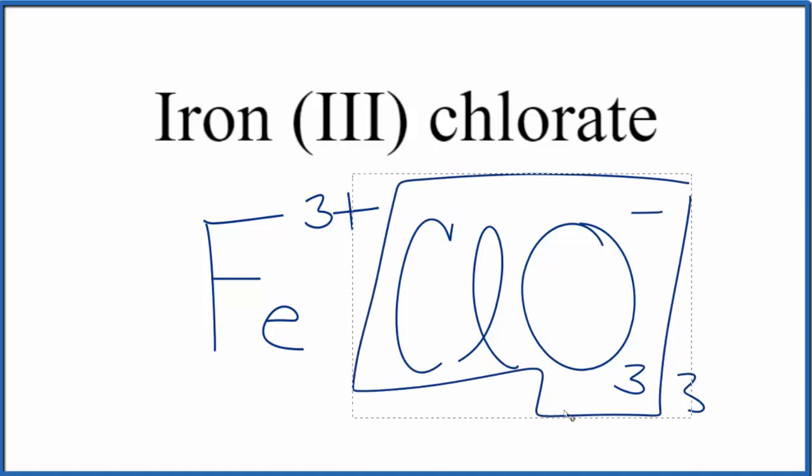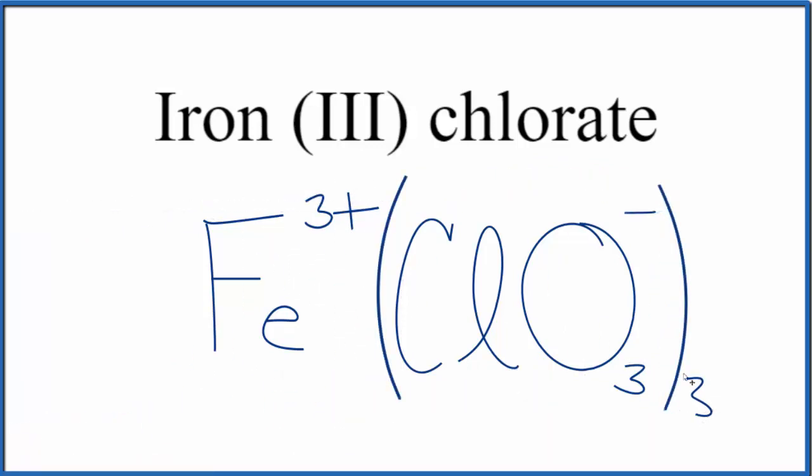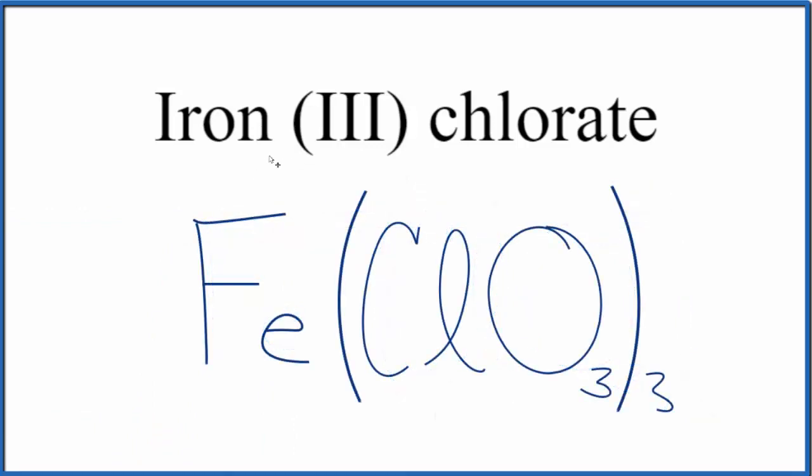So let's replace this with parentheses, since we have three chlorate ions. And now we have 3 times 1-, that's 3-. That balances the 3+. So this is the formula for iron (III) chlorate, Fe(ClO3)3.